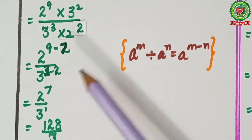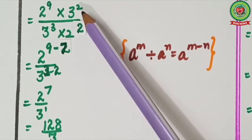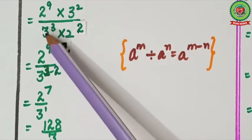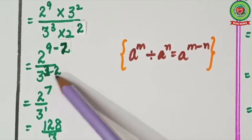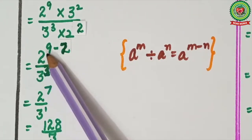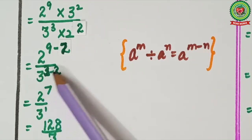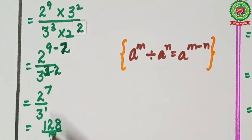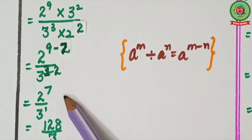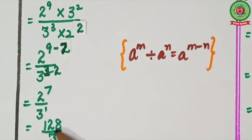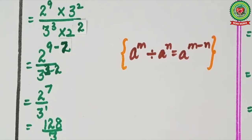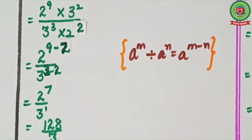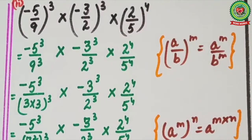Remember: we always shift the smaller power down. Here the smaller power is 2, so it shifts down and gets subtracted. This gives 2 raised to power 9 minus 2 equals 2 raised to power 7, and 3 raised to power 3 minus 2 equals 3 raised to power 1. So 2 raised to power 7 means 2 multiplied 7 times, which is 128, and 3 raised to power 1 is 3. The answer is 128 upon 3.